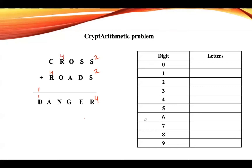Wherever R appears, it is four. Now follow the previous procedure: assign the largest number to C. The largest number is nine. Nine plus four gives thirteen, which produces a carry, and three is not assigned to any letter, so we can assign three to A. Now take four plus O — it should give N.